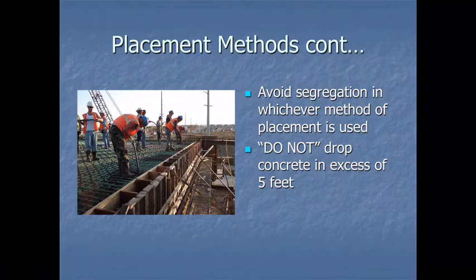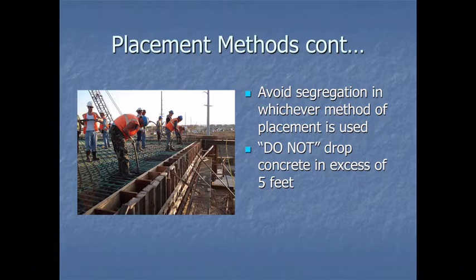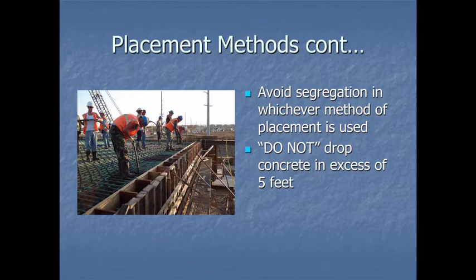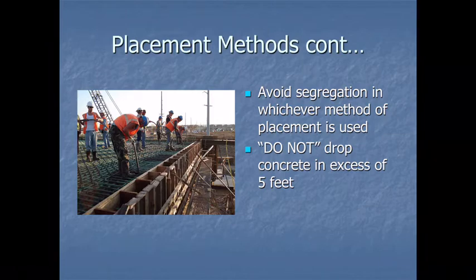During placement, avoid segregation by whatever method is used. Do not drop concrete in excess of 5 feet — get the discharge point close to the point of placement. Segregation occurs when rocks fall to the bottom and paste comes to the top, which does not give us the uniform mass we're looking for. We want a uniform mix of coarse aggregate, fine aggregate, and cementitious paste from bottom to top.